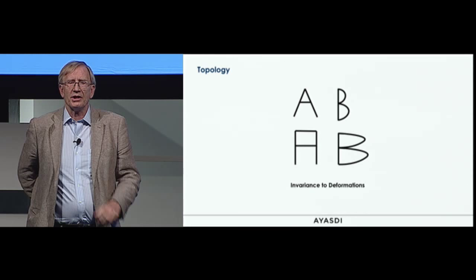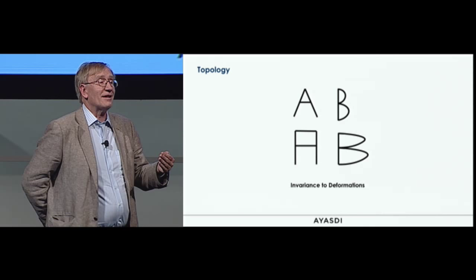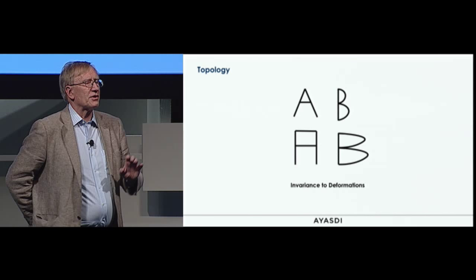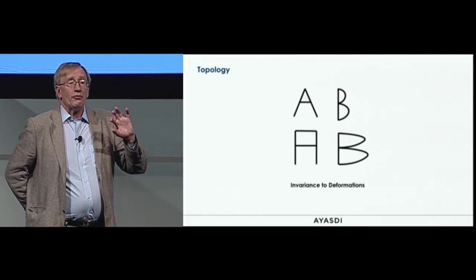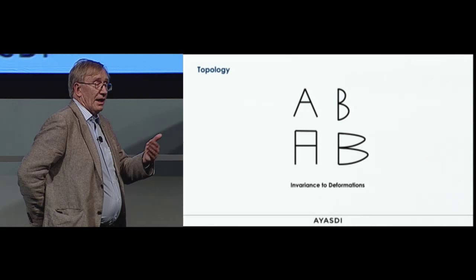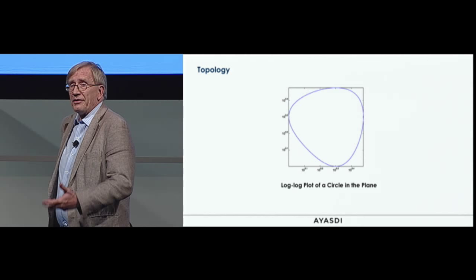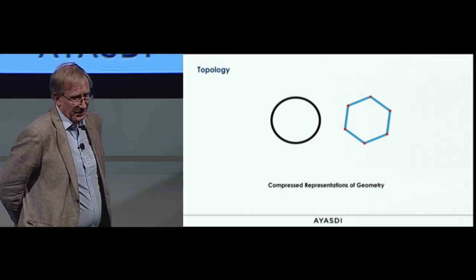Invariance to deformations is what's really key to topology. A very powerful property of the human visual system is the ability to recognize letters even if they're in different fonts, seen from an angle, or on the surface of a soccer ball. We can recognize that the A is the thing with the loop and two legs, and the B has two loops. Trying to get that same kind of robustness into understanding point clouds is what topology is all about.